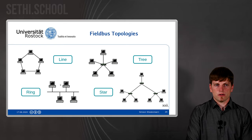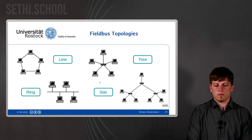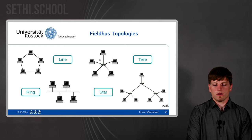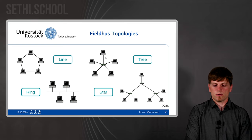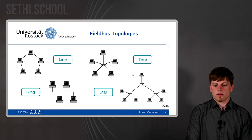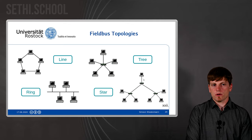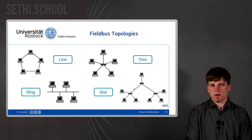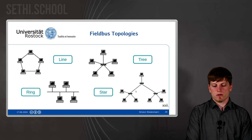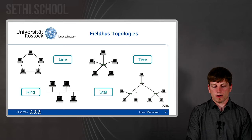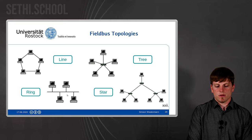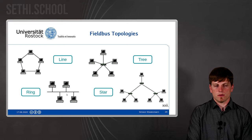These fault tolerance thoughts can be applied to multiple topology scenarios. If you cut a connection in a star topology, only one component will not be there. In a tree topology, depending on which connection you cut, it might only cut off one communication partner, or it could cut away an entire bottom section.